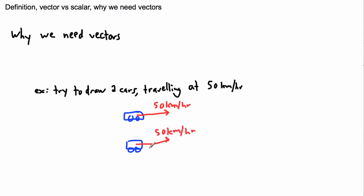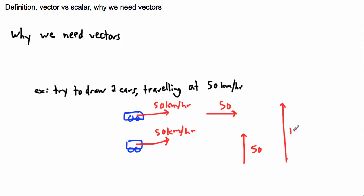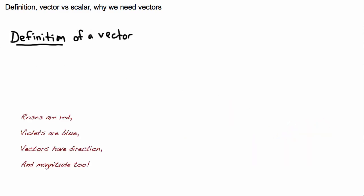This could represent both cars, which is great. But what if they're going in different directions — one going to the right and one going up? You can see how easy it is to just draw another arrow pointing upwards. So one is going right at 50, and one is going up at 50. And if you wanted to represent 100 instead of 50, you'd probably draw the arrow twice as long. So you already have some idea of what to do with vectors.